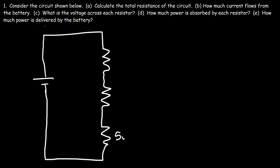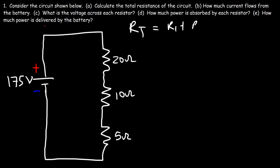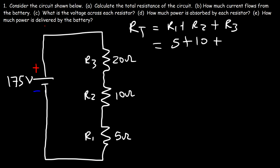We have a 5 ohm resistor, a 10 ohm resistor, and a 20 ohm resistor, with a battery voltage of 175 volts. This is the positive terminal and this is the negative terminal. The total resistance is R1 plus R2 plus R3: R1 is 5, R2 is 10, R3 is 20, which adds up to 35 ohms total.